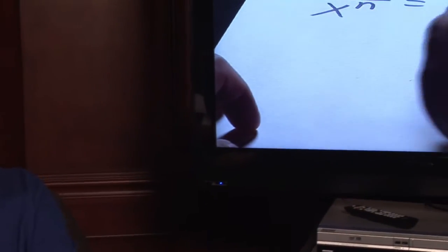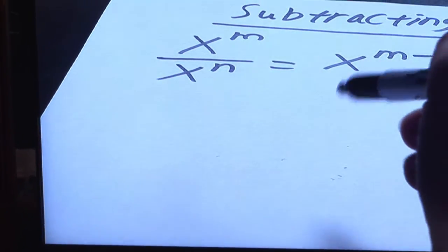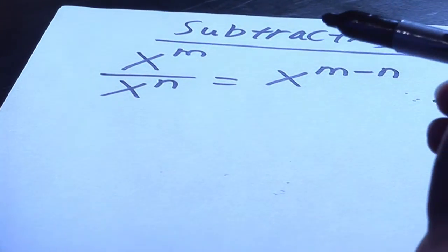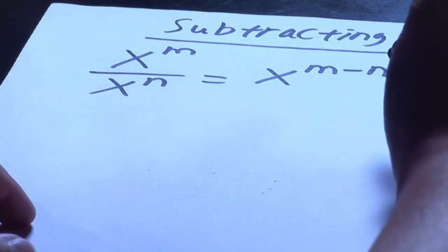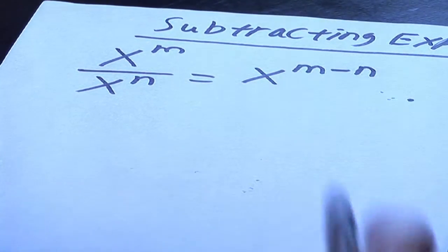The important thing though is to really go over and understand the way this rule works. Basically the idea here is if you have x raised to a power over x raised to another power, then you can subtract the exponents, but it's the top number minus the bottom number.